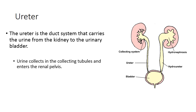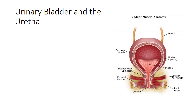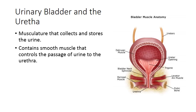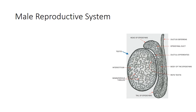Urine collects in the tubules, enters the renal pelvis, and then travels through the ureter to the urinary bladder. The urinary bladder is a muscular structure that collects and stores urine until it's excreted through the urethra. Similar to the pyloric and cardiac sphincters of the stomach, muscular sphincters control the passage of urine to the urethra. That's all you need to know about the excretory system.